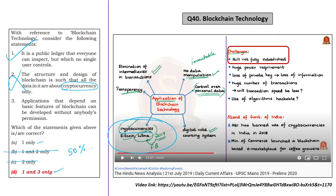Statement 3 mentions that applications depending on basic features of blockchain can be developed without anybody's permission. On 21st July 2019, we saw the challenges of blockchain technology — the first challenge was that blockchain technology is not yet fully established, but still it is in use. So you can infer Statement 3 is correct, making the correct answer Option D — 1 and 3.